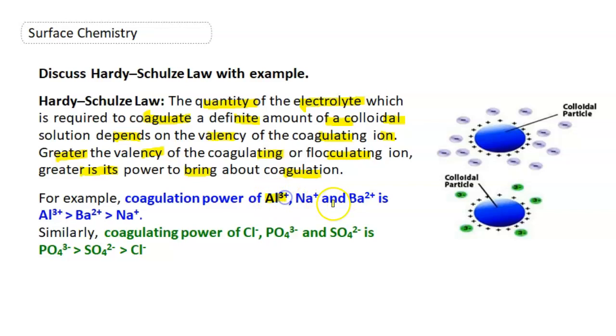For example, Aluminum, Sodium, and Barium. Because Aluminum valency is 3+, Aluminum has the highest coagulating power, then Barium, then Sodium.